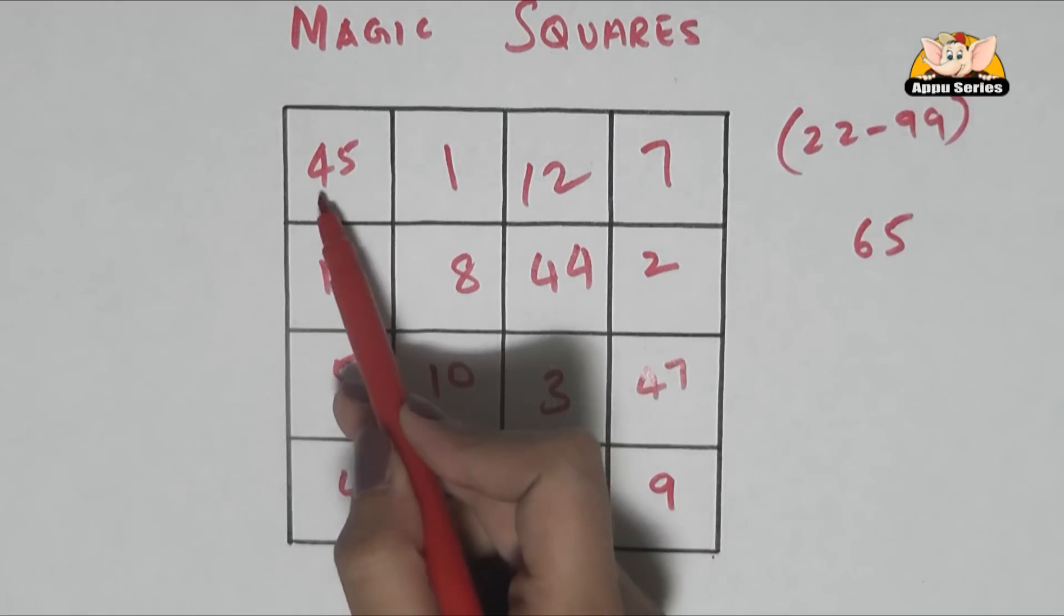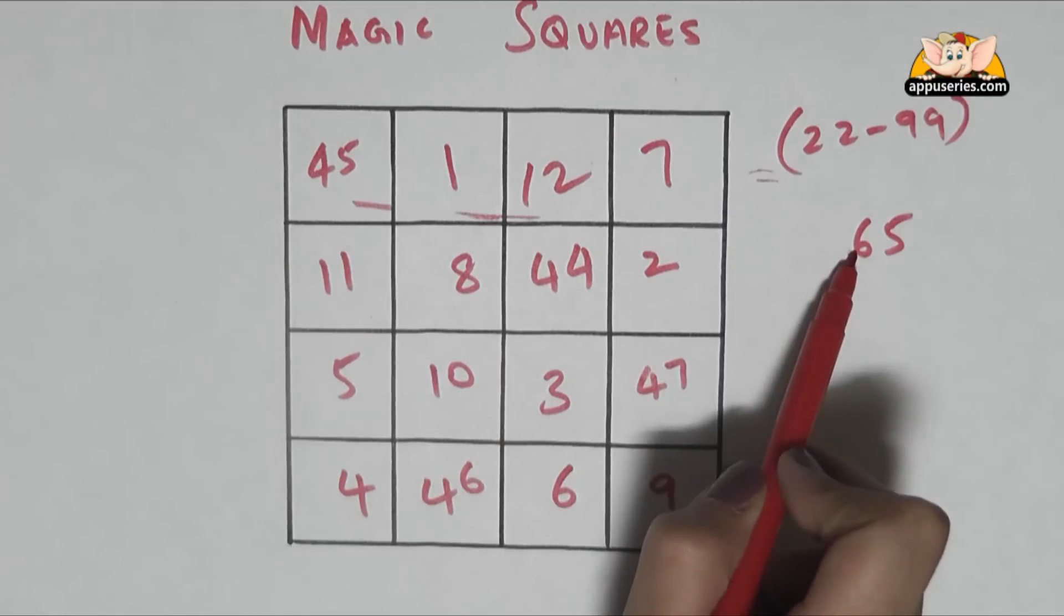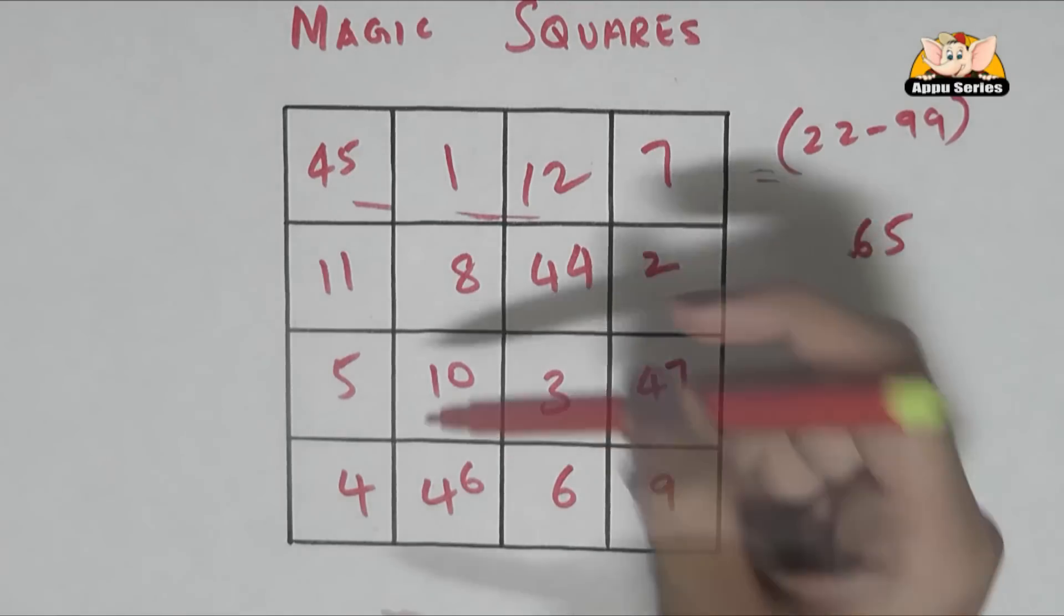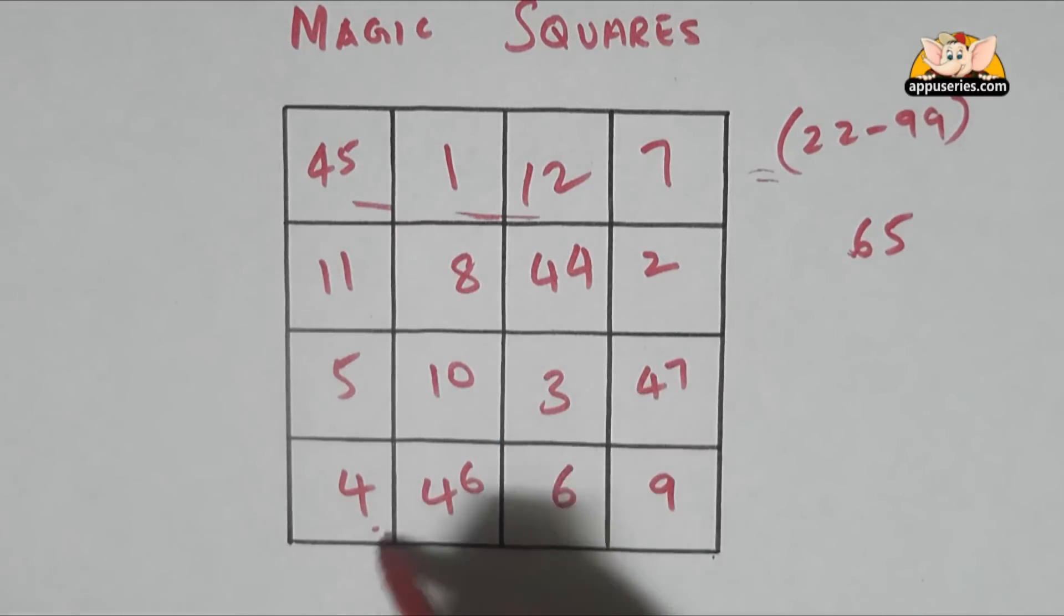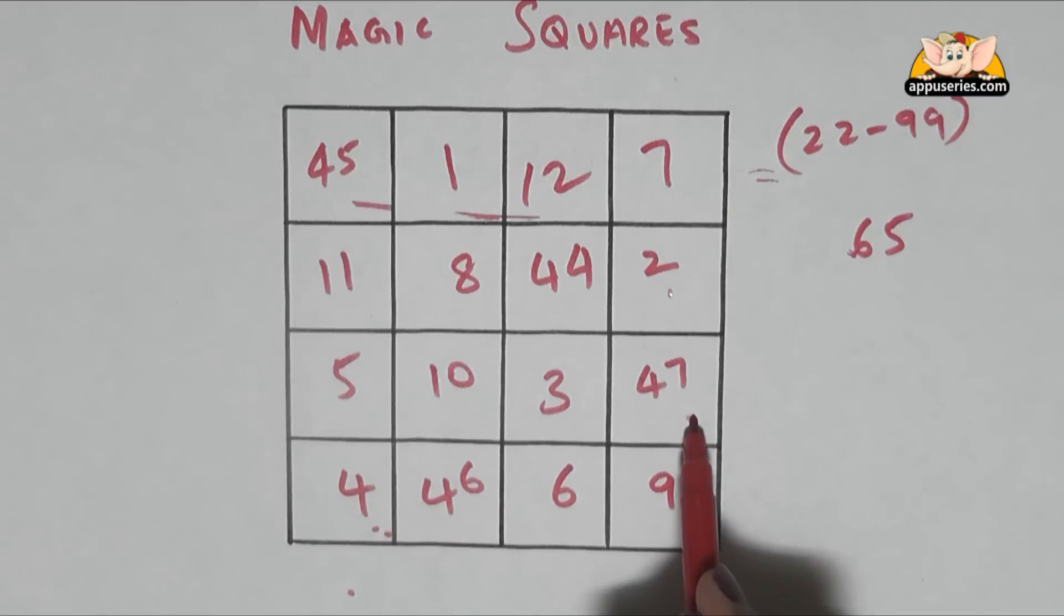Add on all the numbers in this row, it will sum up to 65. Add the numbers of this column, will be 65. Across here will be 65, across here will be 65 again, and 65.